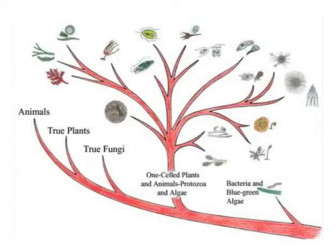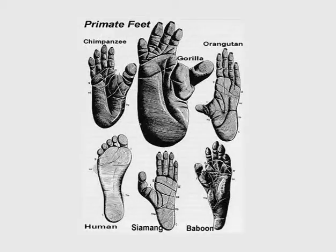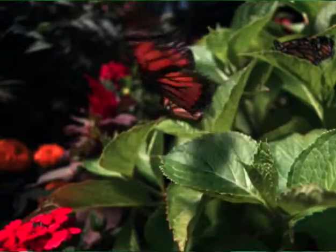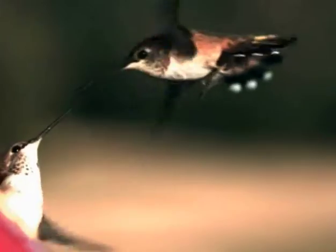Organisms are classified on the basis of evolutionary relationships. The extent of the relationship is determined mainly by structural similarities based on common descent, called homologies. For example, the bones of the forelimbs of lizard, bird, and human are so similar in arrangement and number that they are said to be homologous and they ultimately derive their forelimbs from a common ancestor. Structures that are functionally similar but without genetic affinity and not derived from a common ancestor are analogous. The wings of a butterfly and the wing of a bird are analogous — they perform similar functions but are without genetic affinity.